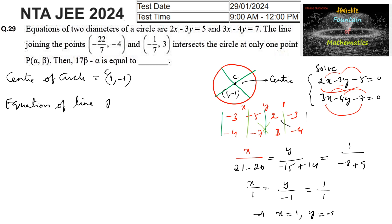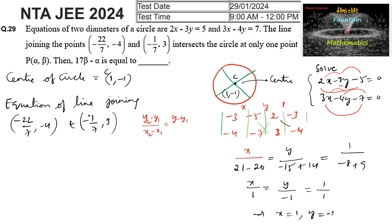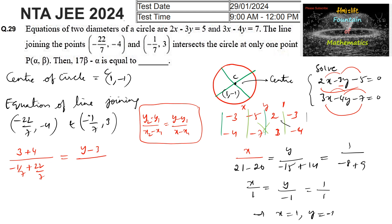We find the equation of the line joining the points (minus 22/7, minus 4) and (minus 1/7, 3). Using the two-point form: y2 minus y1 over x2 minus x1 equals y minus y1 over x minus x1. So y2 minus y1 is 3 minus (minus 4), which is 3 plus 4 equals 7, divided by x2 minus x1, which is minus 1/7 plus 22/7.